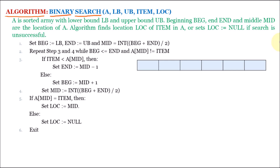Here we are passing various parameters. The first parameter is A, which signifies the sorted array. We are assuming array A contains the elements 7, 9, 11, 13, 16, and 20. Binary search has the precondition that the array should be sorted, so here all the elements are in ascending order.